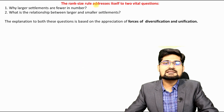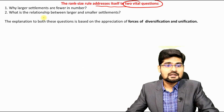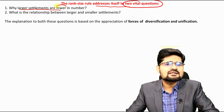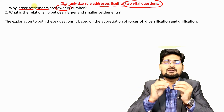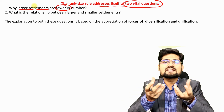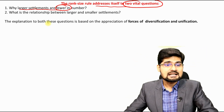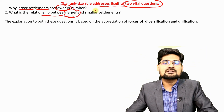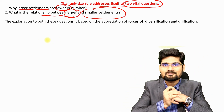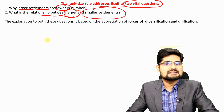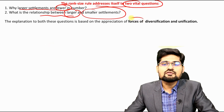Rank size rule addresses two vital questions. First: why are larger settlements fewer in number? As you go up the settlement hierarchy pyramid, the frequency decreases and the number of higher-order cities becomes very few. Second: what is the relationship between larger and smaller settlements — is there a linkage in the pyramidal structure?